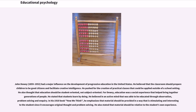John Dewey (1859–1952) had a major influence on the development of progressive education in the United States. He believed the classroom should prepare children to be good citizens and facilitate creative intelligence. He pushed for practical classes applicable outside a school setting and thought education should be student-oriented, not subject-oriented. For Dewey, education was a social experience that helped bring together generations of people. He stated that students learn by doing, and believed in an active mind educated through observation, problem-solving, and inquiry. In his 1910 book How We Think, he emphasizes that material should be stimulating and interesting to encourage original thought.